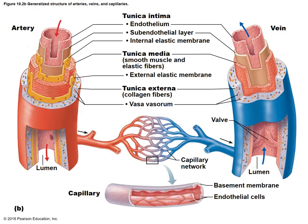In this diagram, on the left is an artery, on the right is a vein, and at the bottom is a capillary. You can see the three different layers listed with their subdivisions: the tunica intima is the innermost, the tunica media is the muscle layer. Notice that the tunica media is thicker in the artery than in the vein.